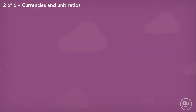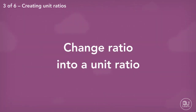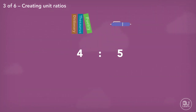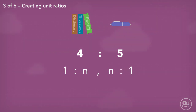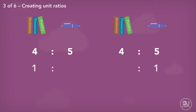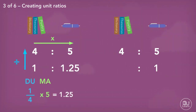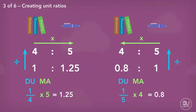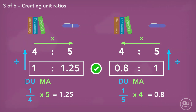In some questions they may ask you to change a ratio into a unit ratio. For example, in a classroom the ratio of books to pens is 4 to 5. Write the ratio in the form 1 to n and n to 1. This means write it as a unit ratio where books are the unit, and then where pens are the unit. Using the same technique — divide up and multiply across — we have now created unit ratios. The purpose is to see how much one of something is worth, like what we've seen earlier.